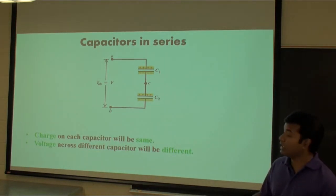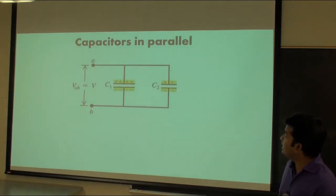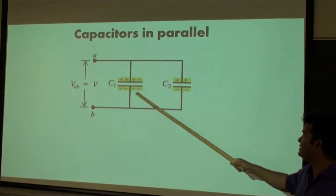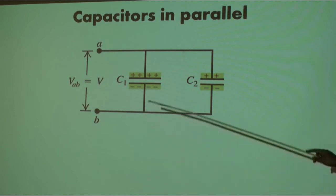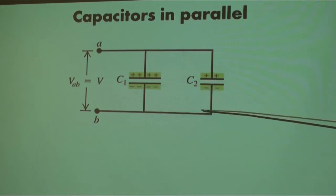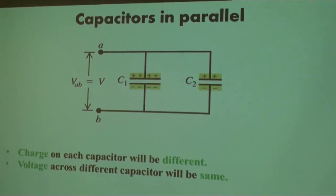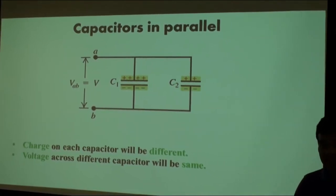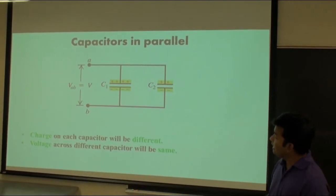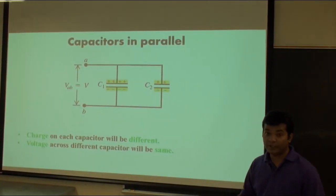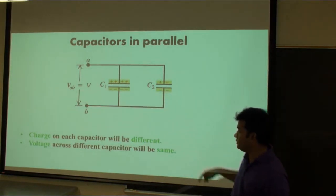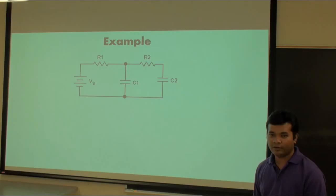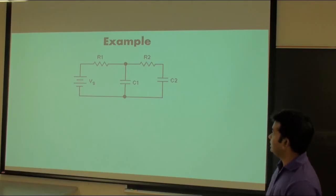Now we will discuss capacitors in parallel. Consider two capacitors with capacitances C1 and C2 in parallel. Both capacitors have the same voltage VAB. In this case, the charge on each capacitor will be different because Q equals C times V, where C is the capacitance and V is voltage. As C is different, the charge will be different. But since both capacitors are connected to the same nodes, the voltage across each capacitor will be the same.